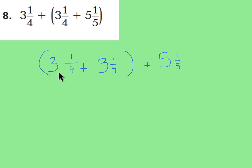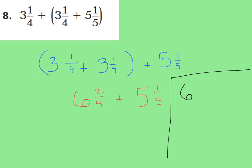Now add 3 and 1 fourth plus 3 and 1 fourth, keeping your fourths together. 3 and 1 fourth plus 3 and 1 fourth equals 6 and 2 fourths, also known as 6 and a half, plus 5 and 1 fifth. My denominators are different, so I need to find common denominators for 4 and 5. Rewriting as 6 and 2 fourths plus 5 and 1 fifth, the first common denominator is 20, because multiples of 4 are 4, 8, 12, 16, 20 and multiples of 5 are 5, 10, 15, 20.